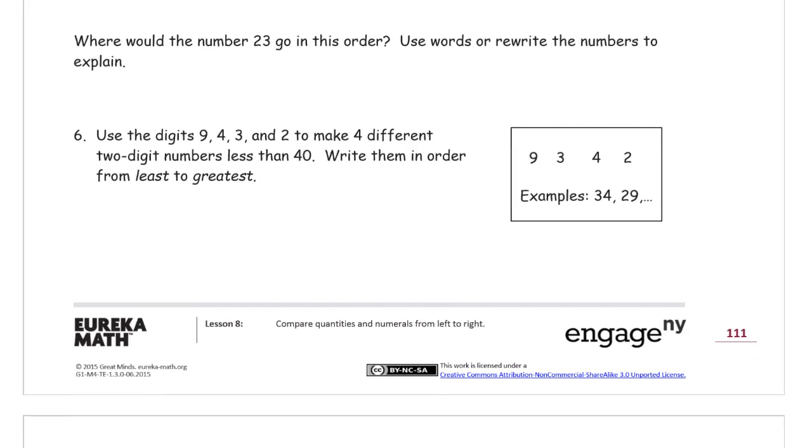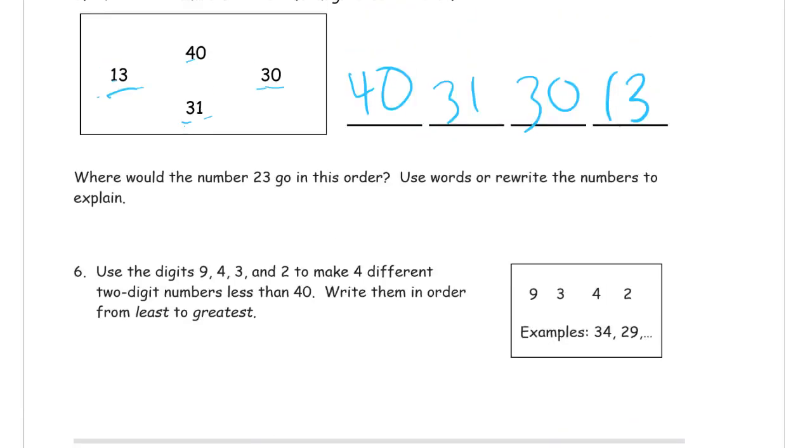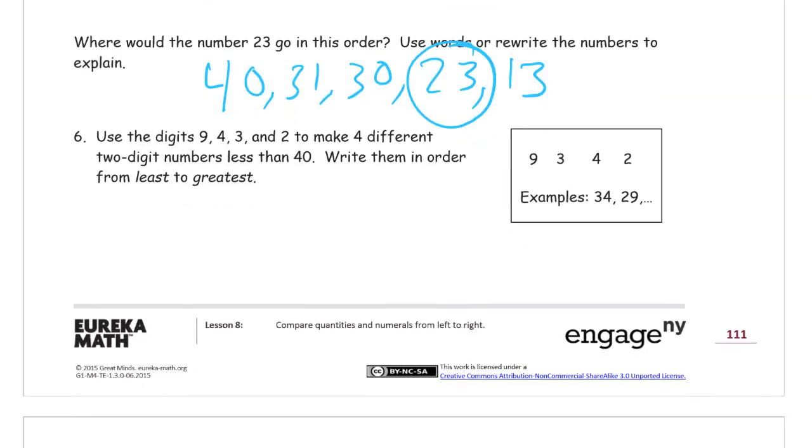Where would the number 23 go in this order? So anything in the 20s is going to have to go in between the 30s and the teens. So it's going to have to go right here in between the 30 and the 13. You don't have to write that arrow right there, I just kind of drew that to show where I was looking. So I'm going to rewrite the numbers here. You could say it would go in between the 30 and the 13 and just write that sentence out, or you can just write 40, 31, 30, 23, 13. And you don't have to circle the 23, but I'm going to circle it anyway, just because that's the number you have to show where it was.